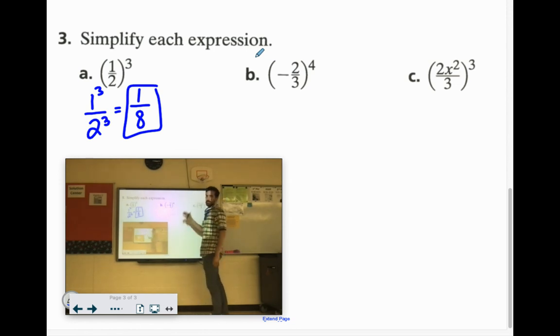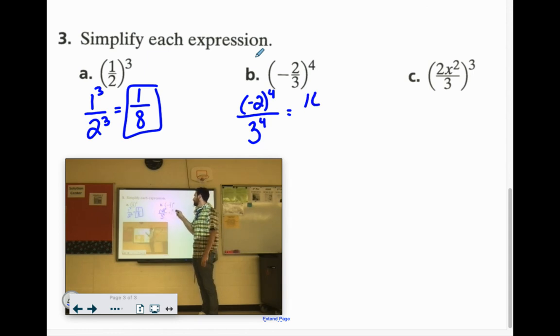A negative number to the 4th power. It has an even exponent. So it's got to come out positive. So we have negative 2 to the 4th over 3 to the 4th. 2 times 2 is 4, times 2 is 8, times 2 is 16. 3 times 3 is 9, times 3 is 27, times 3 is 81.